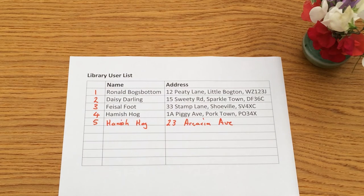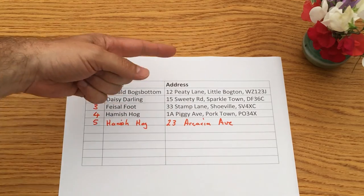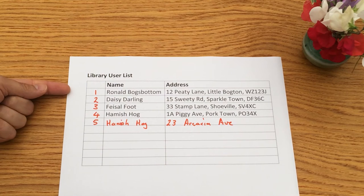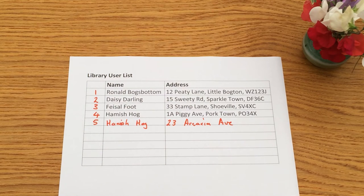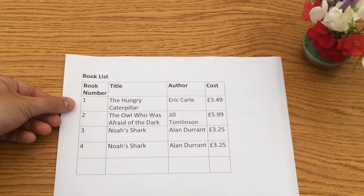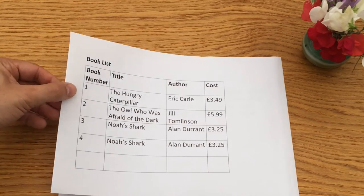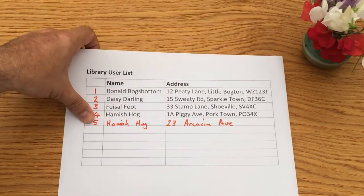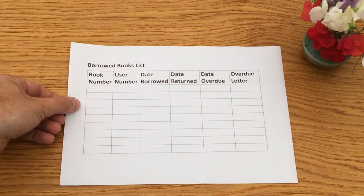Now, what happens when they actually want to borrow a book? One of the key things about databases is always keeping your information in the right table. We only want to keep all the information about library users in the library users table, and all the information about books in the book list table. So how do we link these together when somebody borrows a book? We make a new table called the Borrowed Books List.